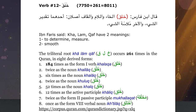Ibn Faris rahmatullahi alayhi says with regards to the meaning of these: aslani ahaduhuma at-taqdeer, taqdeeru shayt, wal-akharu mulasatu shayt. He's telling us that these three root letters have two core meanings: one is a determination, a measurement, a decree; and the second deals with smoothness, with evenness.